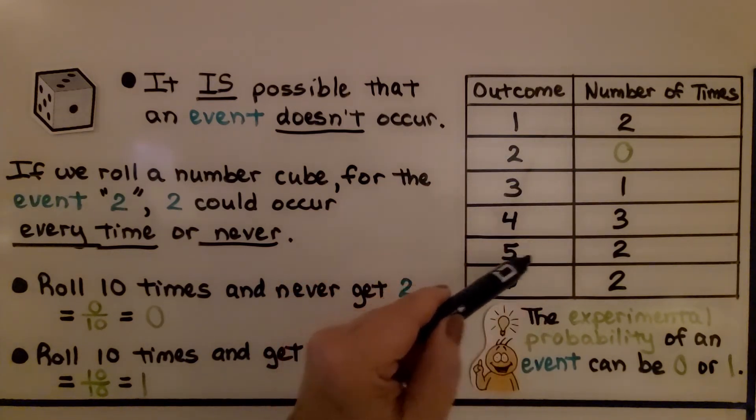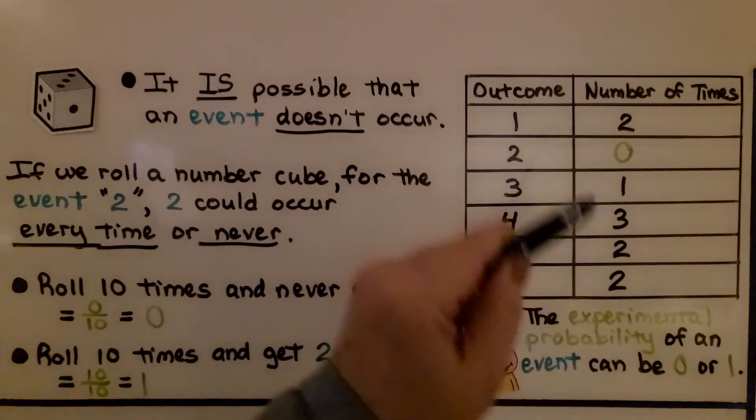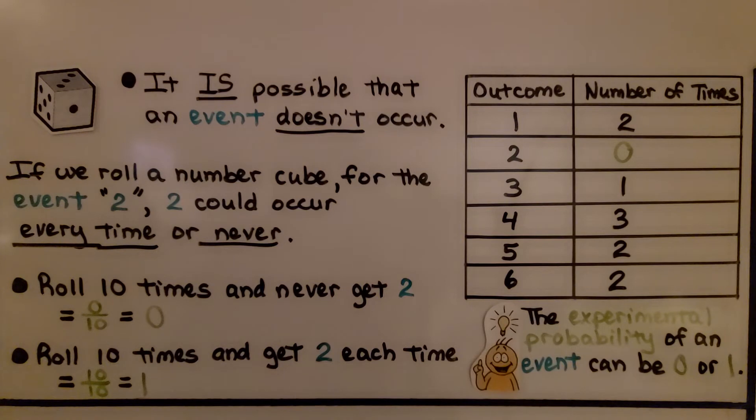a 4 three times, a 5 two times, and a 6 two times. That would total the times we rolled the cube, 10 times. We could roll 10 times and never get 2. We would get it 0 out of 10 times, which is equal to 0.